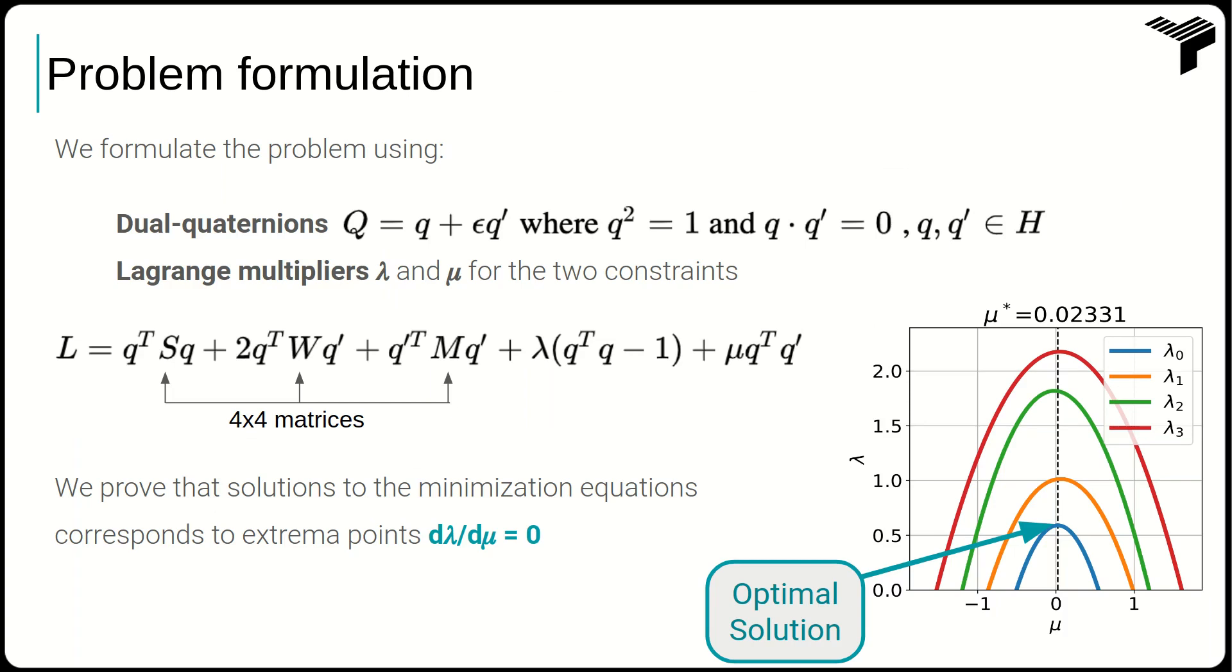We parameterized the rigid transformations using dual quaternions and showed that the problem is defined by three 4x4 symmetric matrices together with two Lagrange multipliers.